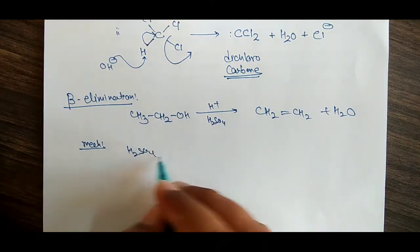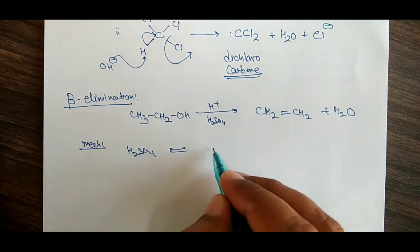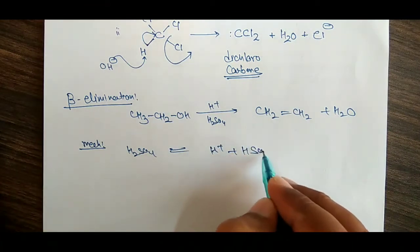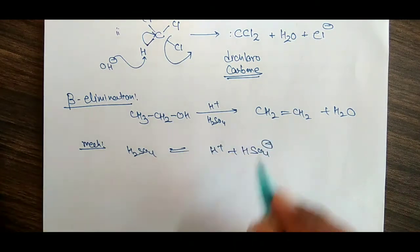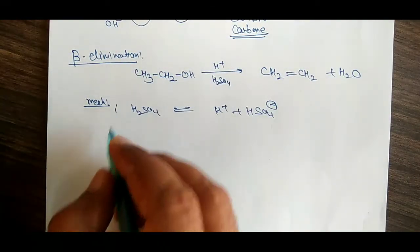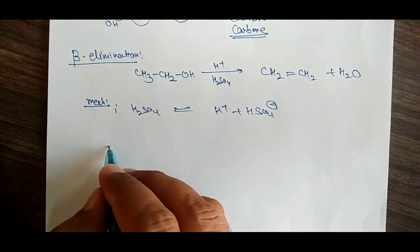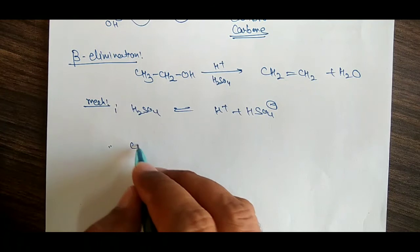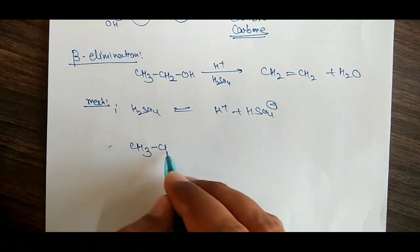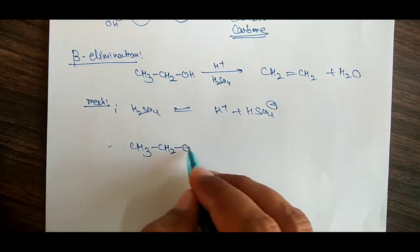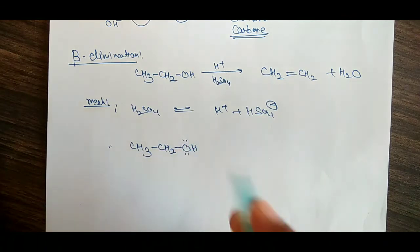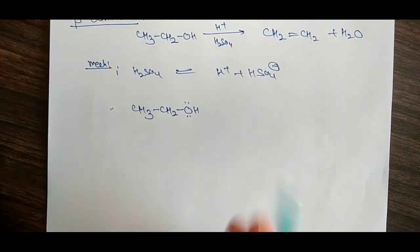Before studying the mechanism, note that the proton here comes from sulphuric acid. So if we have H2SO4, step one of the mechanism is: H2SO4 breaks down into H positive plus HSO4 negative. That is our first step of the mechanism.